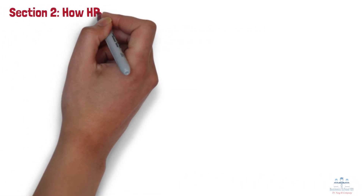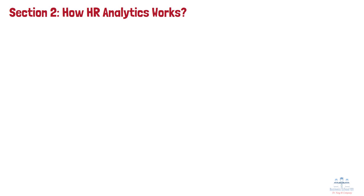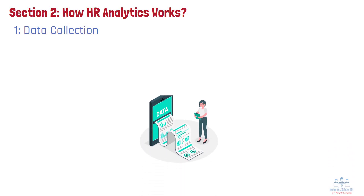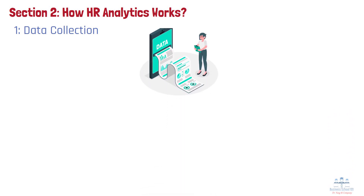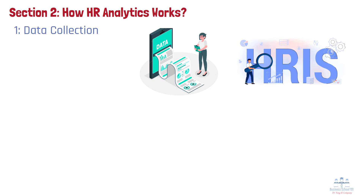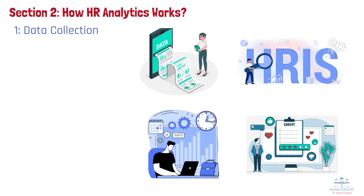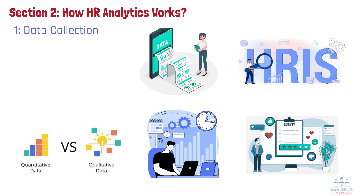Section 2: How HR analytics works. HR analytics involves four general steps. Step 1: Data collection. The HR analytics process begins with collecting data from a variety of internal sources. This includes structured data from human resource information systems, such as employee demographics, job history, compensation, and performance ratings. It also involves gathering information from surveys that measure engagement, job satisfaction, and workplace culture. Additional data points come from time tracking and attendance systems, training records, and even exit interviews. By compiling both quantitative and qualitative data, HR teams lay the groundwork for understanding workforce behaviors, trends, and challenges from multiple angles.